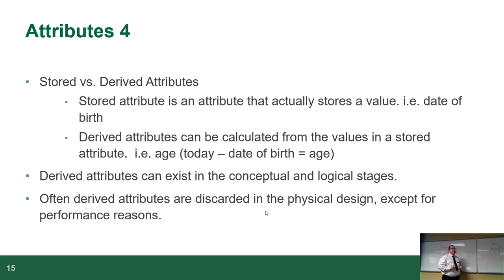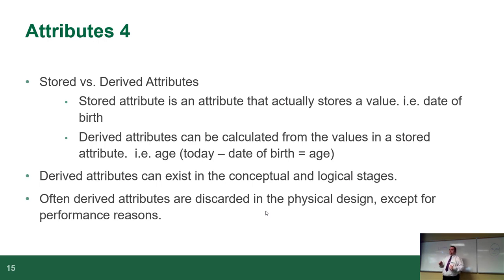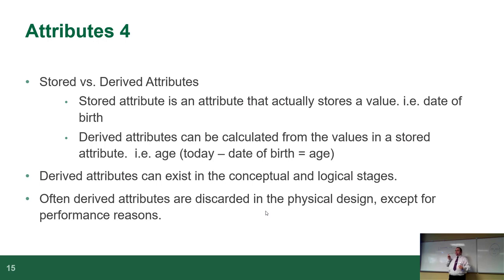A stored attribute is easy to understand — your name, address, email address, SIN number, passport number. They go into the database and are self-contained. A derived attribute is something to be calculated. If you can calculate the value, you don't normally store it. These will exist at the conceptual and logical levels, but at the physical level they often go away for performance reasons — every time you update a record containing a calculated value, you have to recalculate it, adding overhead.